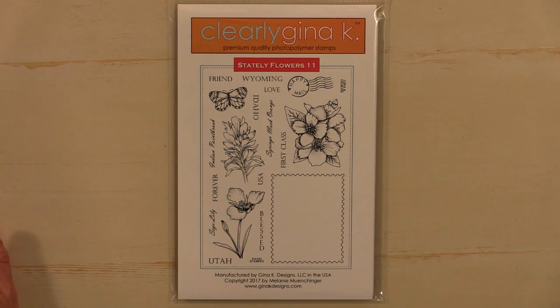Melanie included some fun accents like this postage stamp frame and a canceled mark that you can stamp either Happy Mail or Gina K Designs inside. This would be adorable on a hand-delivered envelope or right on the card as you'll see in some of the upcoming projects by our team. If you love coloring and you love flowers, you will love this set.